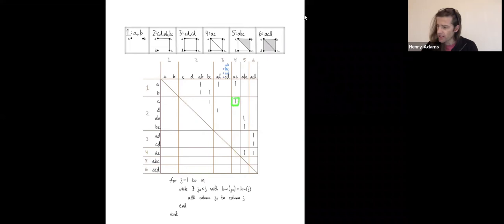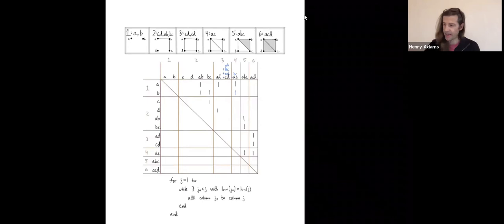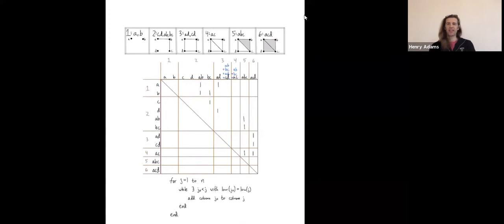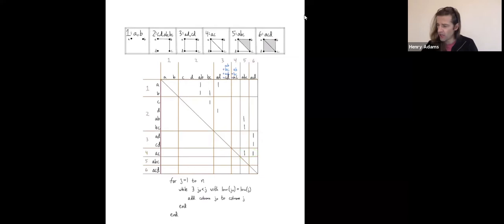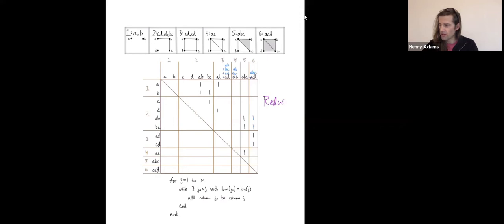Moving to the next column: its lowest one collides with the lowest one from an earlier column, so I add that earlier column and get a zero and a one. Again, the new lowest one collides with an earlier column, so I add it and cancel that out. This matrix is now reduced — it's our reduced boundary matrix.